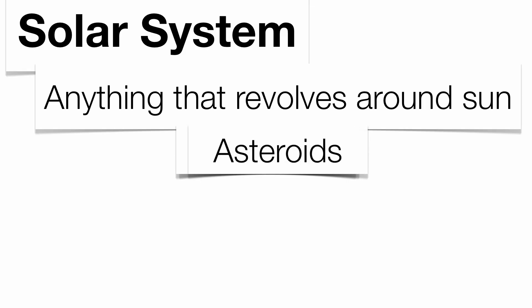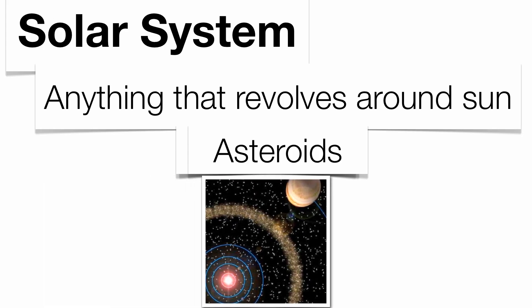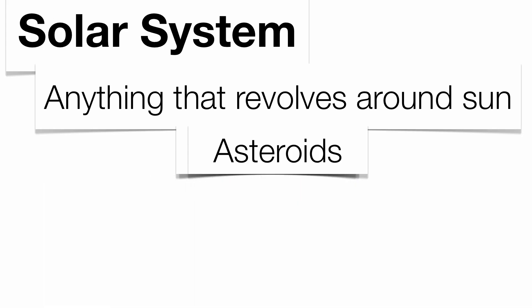We also have big chunks of rock that orbit the Sun, which are called asteroids, and that's going to be found in between Mars and Jupiter. And the most obvious piece of space material moving around the Sun are going to be our planets.